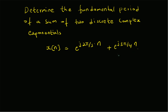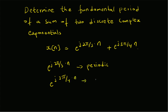Both components are periodic in themselves. The first, e^(j·2π/3·n), is periodic because the frequency 2π/3 is a rational multiple of 2π — specifically (1/3)·2π. Similarly, e^(j·3π/4·n) is also periodic because 3π/4 equals (3/8)·2π, so it too is a rational multiple of 2π.